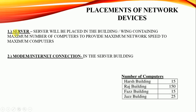The next question asks about placement of network devices, specifically the server. The server will be placed within the building or wing containing the maximum number of computers. You get this answer from the 'number of computers' table — select the building with the highest count. The reason is to provide maximum network speed to the maximum number of computers.